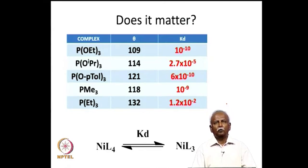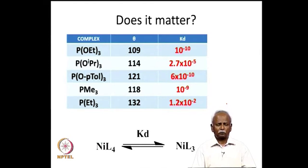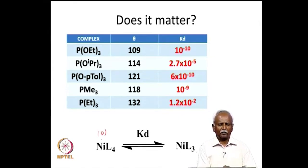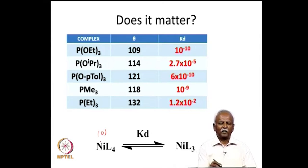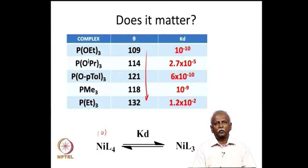This relates directly to the dissociation constants of metal complexes. In a system where four ligands are connected to a nickel(0) atom, nickel would like four ligands to achieve an 18-electron configuration. But because of the large cone angles of the phosphines, it is not possible to pack four of them around the metal. As you increase the ligand size, one tends to dissociate easily.